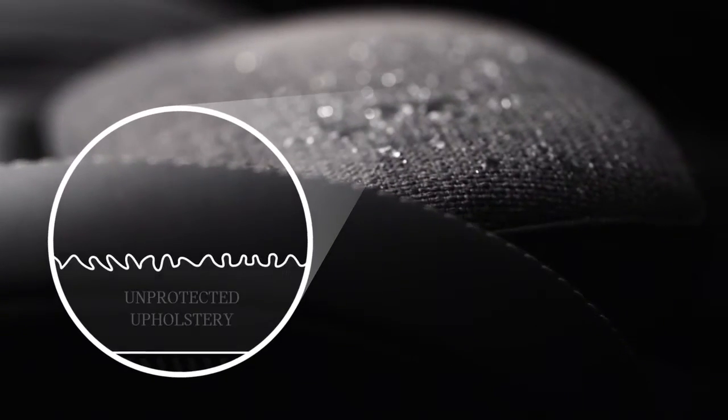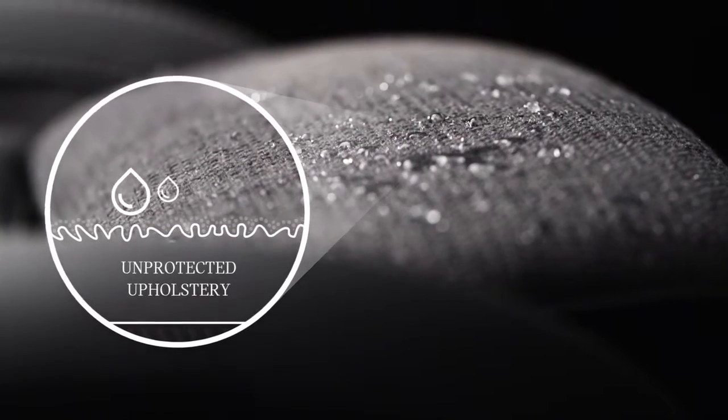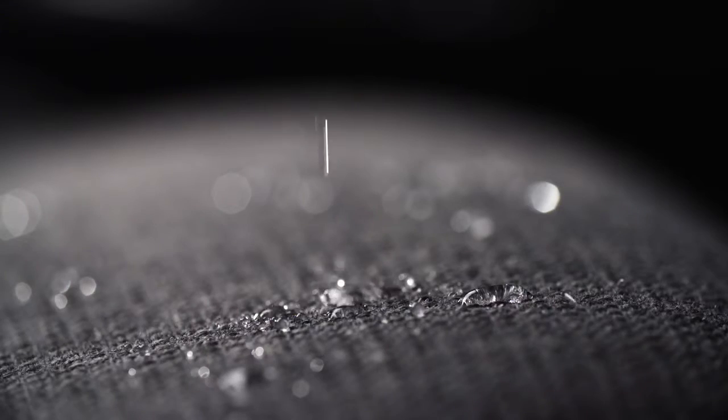Inside, Stain Guard coats each fabric fiber with an invisible barrier that shields against spills, dirt, grease and oil. Spillages can easily be wiped off or vacuumed away.